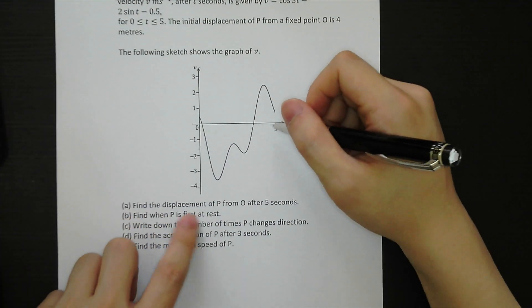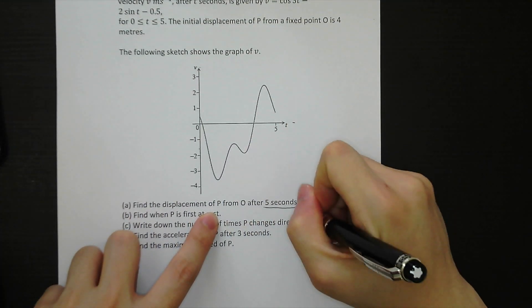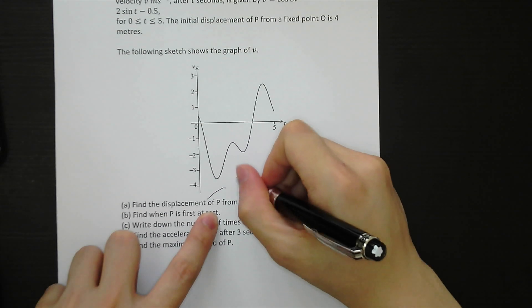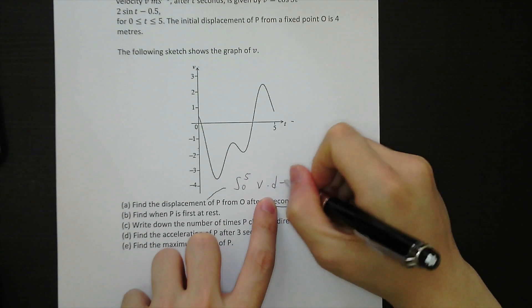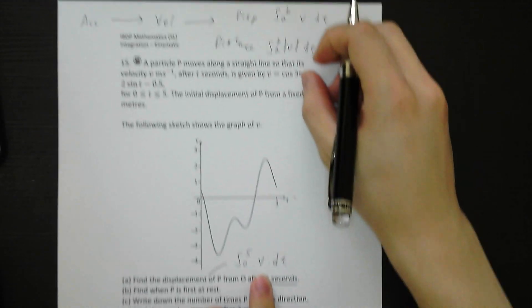Part a, find the displacement of P from O after 5 seconds. So displacement: integration from 0 to 5, the velocity functions, and then dt without absolute values.